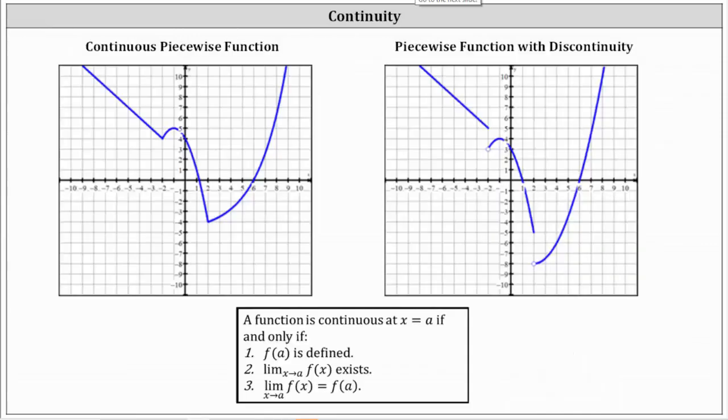If we take a look at the graphs of these two piecewise functions, notice on the left we have a continuous piecewise function. We can sketch the function without lifting up our pencil, meaning the graph has no holes or breaks. However, on the right we have a piecewise function with discontinuity because there are breaks or holes in the graph. Notice how there's a break at x equals negative two as well as x equals positive two.